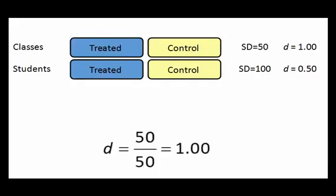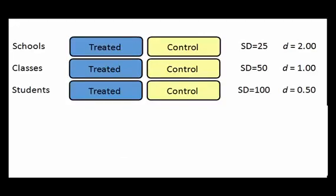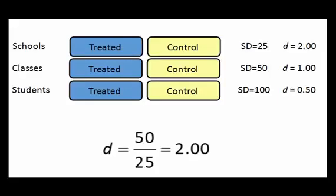The same idea applies if we have a three-level study, where the students are nested within classes and classes are nested within schools, and we randomize schools to conditions. In this case, the analysis will use the standard deviation of the school means, which may be 25. The effect size will be computed as 50 over 25, which is 2.0.